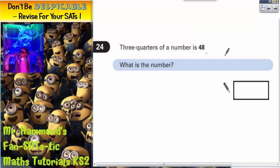Three quarters of a number is 48. What is the number? Well, the easiest thing to do here is to draw ourselves a pizza.